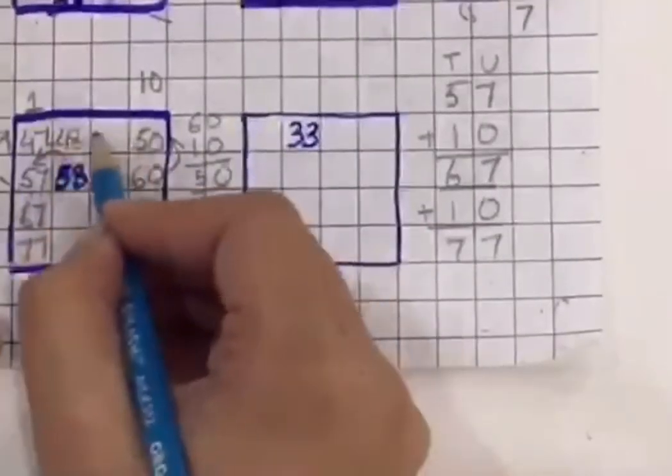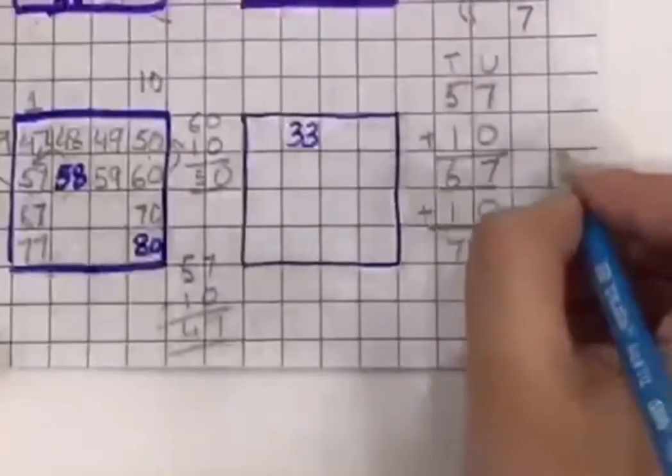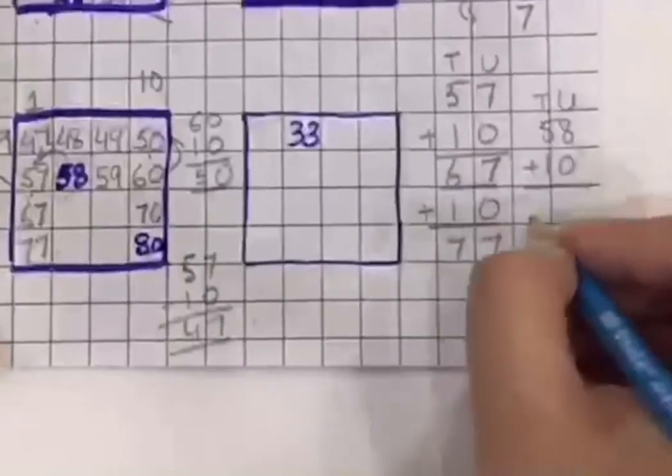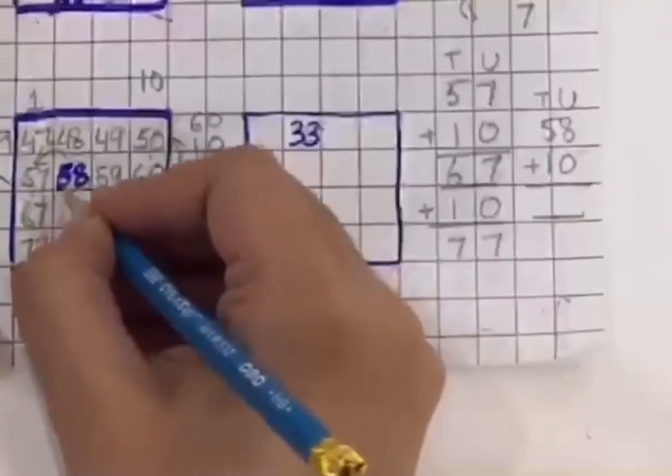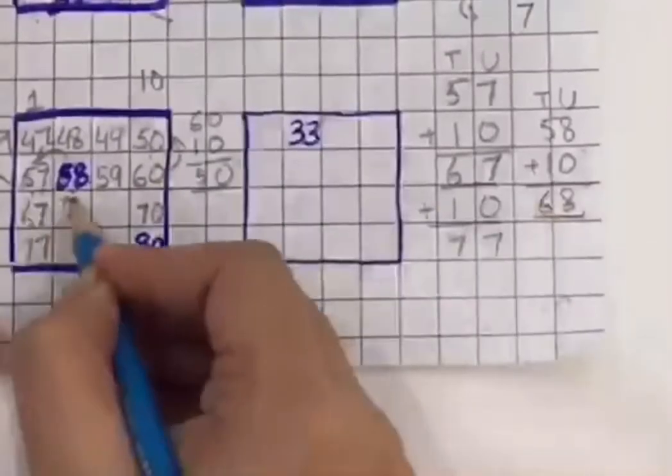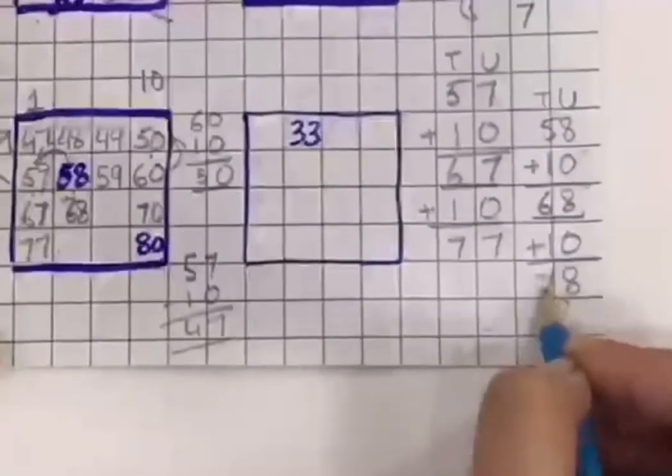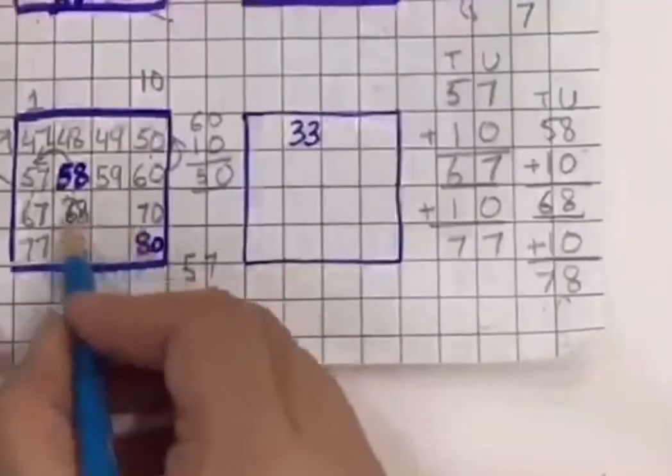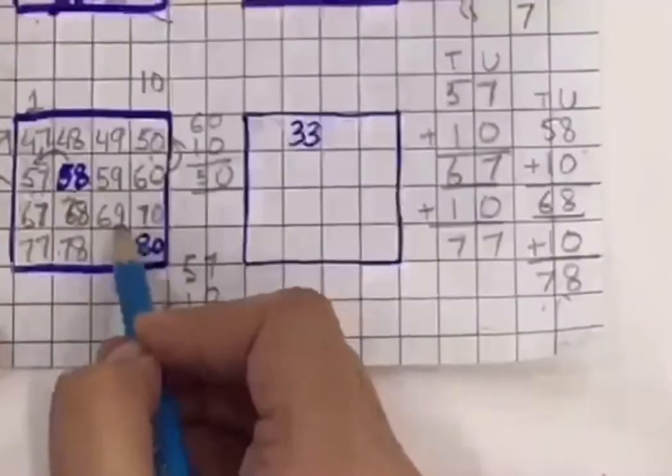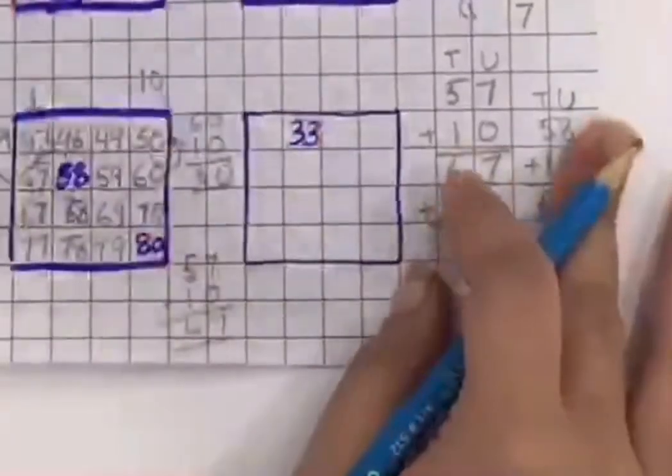Now again, I am going to add 58 plus 10 because I am moving down the column now. 58, I am going to solve this one. So 68 is the answer here. Now I am going to add 10 again in 68. It will give me 78. Now this is easy, we can simply complete it. 67, 68 and this is 69. 77, 78 and this is 79. Our block is complete now.